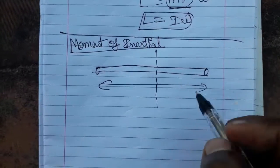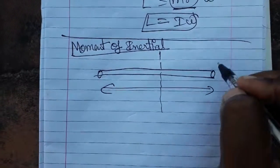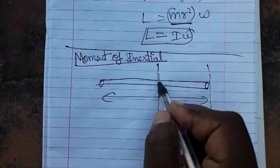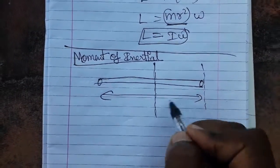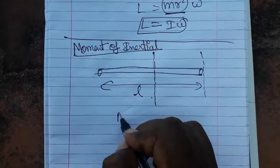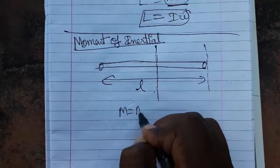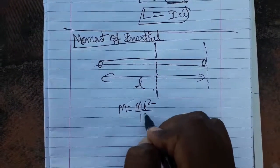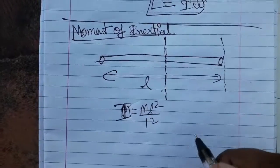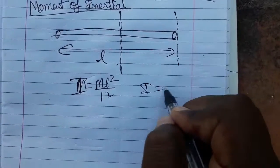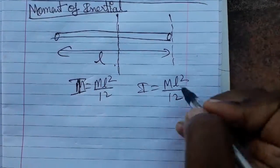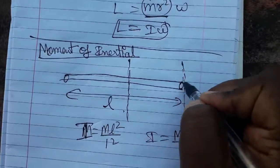In this video we are going to see the moment of inertia at the edge of a rod. As we know, when the rod is rotating at the center, for a rod of length l, the moment of inertia is ml² divided by 12. So I = ml²/12.